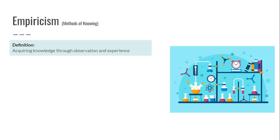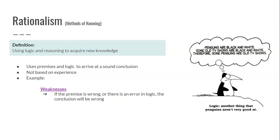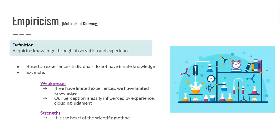Next is empiricism — acquiring knowledge through observation and experience. Where rationalism does not use experience, empiricism does. There is a belief that individuals do not have inherent knowledge, and that everything we learn is based on the experiences we have. For example, learning to walk: someone who truly believes in empiricism would say we learn to walk based on experience and exploration, not from being told how. A child doesn't fully understand language during the time of life when we learn to walk, so it's based on how we explore the world around us — over time, the experience leads to walking.